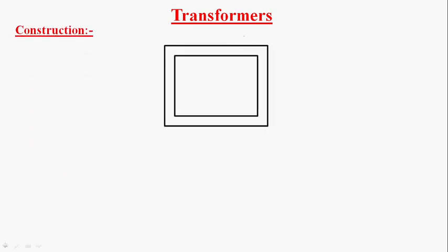Today we are going to learn about the construction of a transformer. This is the structure we are using to study the transformer. This one is the magnetic core of the transformer. The magnetic core is used to provide the path for the flux.